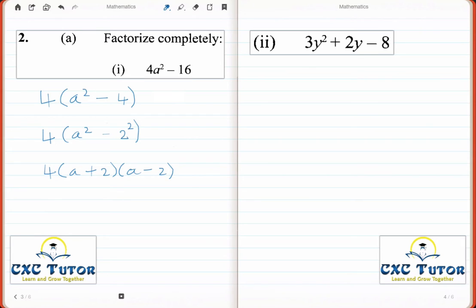Moving on to part 2 now, which gives us the expression 3y squared plus 2y minus 8. We're asked to factorize this completely as well. The first thing I would do, I would multiply the coefficient of this y squared term by the constant at the back, which is minus 8. So 3 times minus 8 is minus 24. Now we seek two factors of 24 that when I add them together give me positive 2.